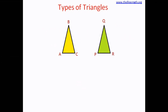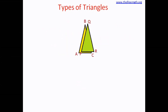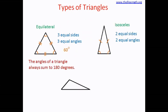Put one triangle on top of the other so that angle P fits into angle A and angle Q fits into angle B. Now flip the top triangle so that angle R fits into angle A and angle P fits into angle C. If the triangles still fit into each other, that means angle A and angle C are exactly the same size. This verifies that in an isosceles triangle, when two sides are equal, the two angles are equal as well.